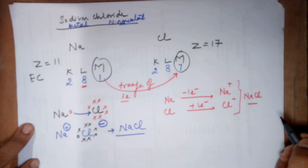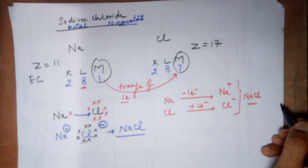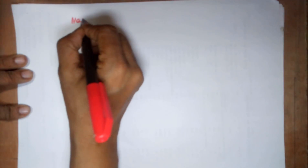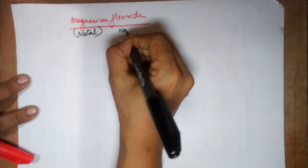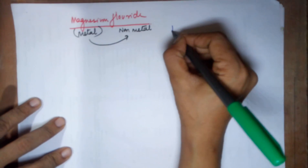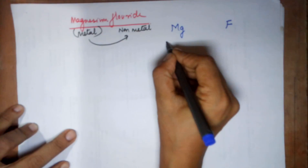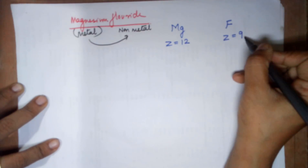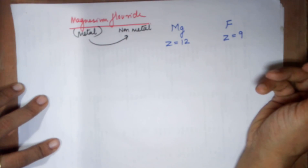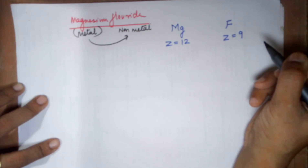This is how you represent the formation of an ionic compound for sodium chloride. The second example is magnesium fluoride. Magnesium is the metal and fluorine is the non-metal, so the transfer of electron has to happen from magnesium to fluorine. Magnesium has Z = 12 and fluorine has Z = 9. We are not concerned with protons inside the nucleus; our only concern is the outermost shell electrons — the valence electrons — because these are the electrons that participate in bonding as they are farther from the nucleus.